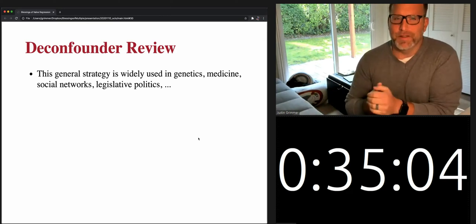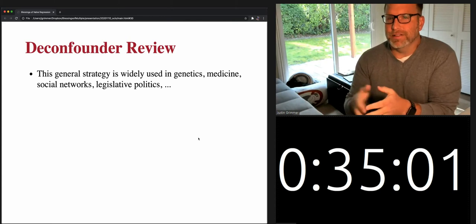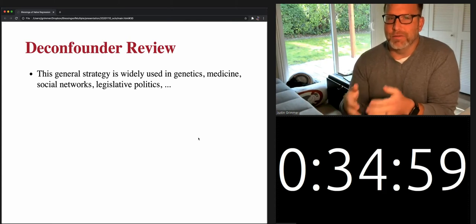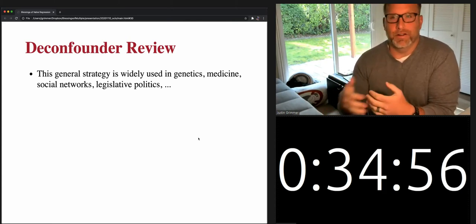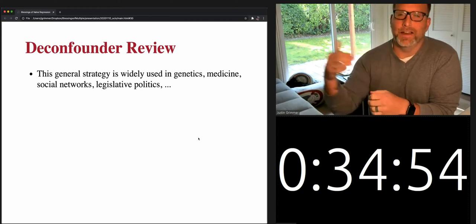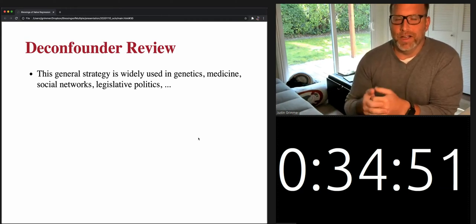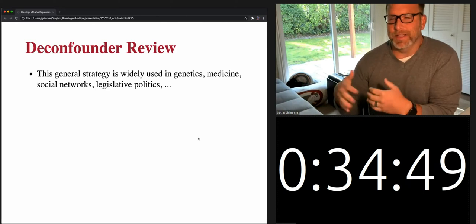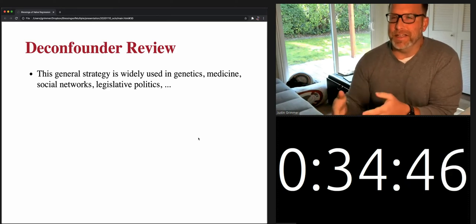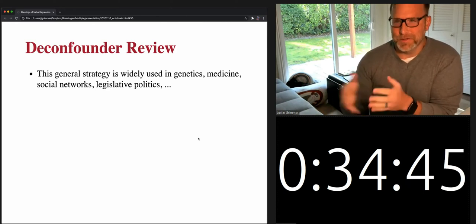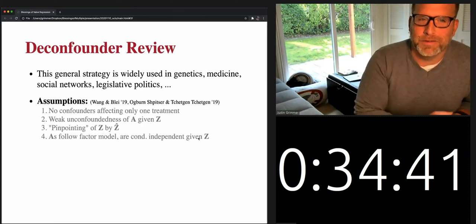Think about the D-confounder this way: if we have an outcome like an incumbent's vote share, and we're interested in the effect of a particular set of roll call votes on that vote share, we may adjust for a DW-NOMINATE score that's based on those roll call votes — but that's exactly what the D-confounder is doing. So it turns out the Congress literature has been ahead of the game on D-confounding for quite some time.